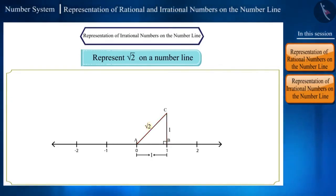Measure the length of AC using a compass and draw an arc on the number line which cuts the number line at point E. Point E in the number line will represent the number root 2.